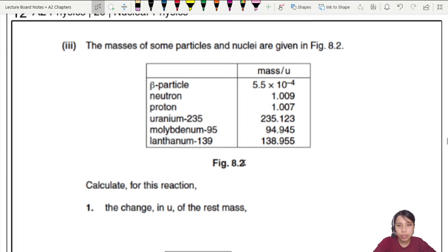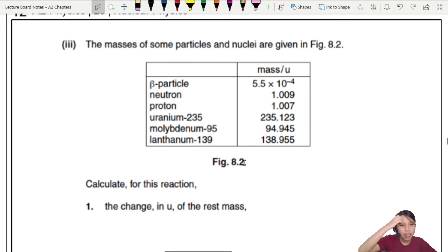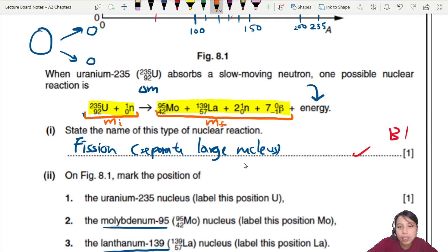Moving on, the masses of some particles and nuclei are given. Calculate for this reaction the change in u of the rest mass. There's going to be some change in mass because before and after, all this has mass. Between here and there will be some change in mass. Where does it go? Converted into energy. We're going to calculate the total mass of all the reactants and compare it with all the products' mass after the nuclear reaction.